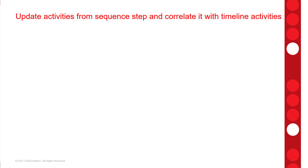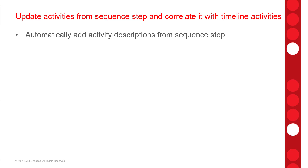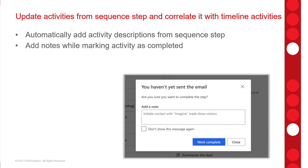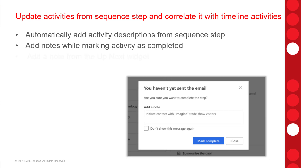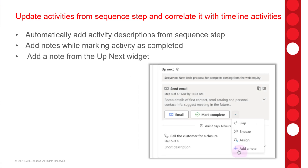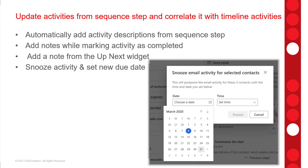These additional features related to the sales accelerator give users more options when it comes to activities and notes. Users can automatically update activity descriptions from the sequence step description if needed. They can also add notes while marking an activity as completed, add a note directly from the 'up next' widget, or snooze an upcoming activity and set a new date and time for when that activity is due.